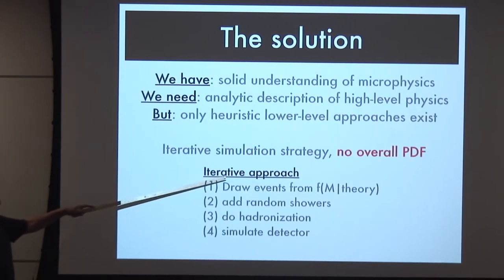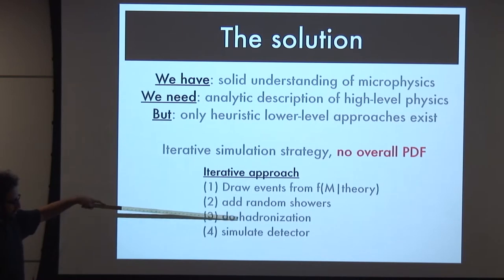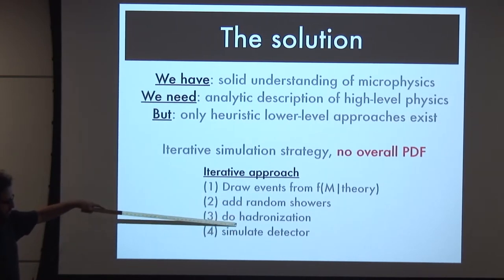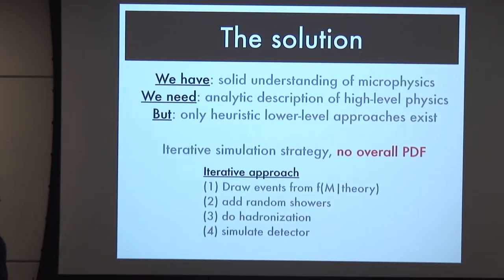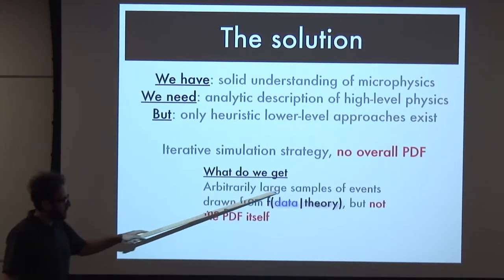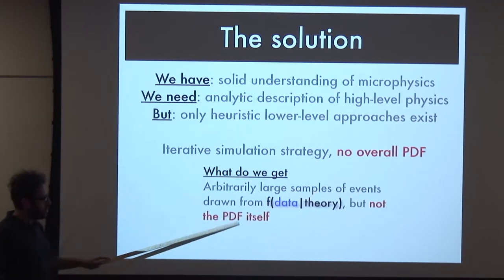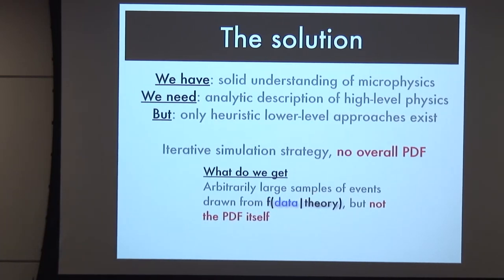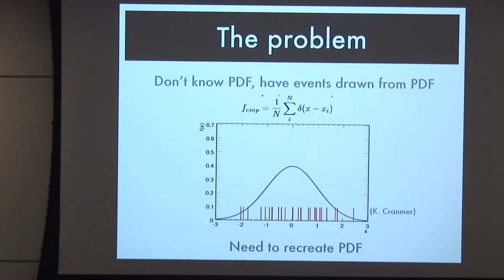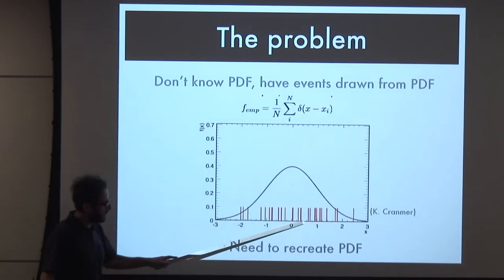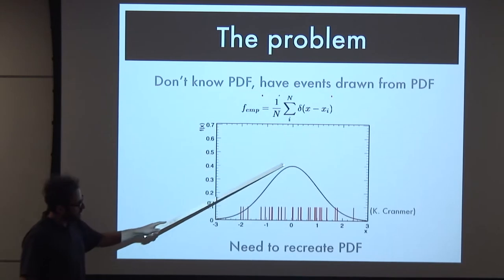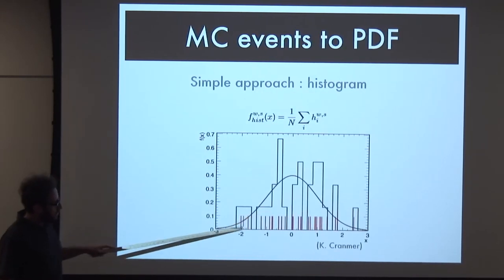What we can do is draw events from this and push them through simulators to add random showers, digitization, and simulate detectors. This means we're in a funny statistical situation where we can get arbitrarily large samples of events, but we don't know the underlying distribution from which those events are drawn. We have a procedure for generating as many examples as we'd like, but we don't know what it is. If you have a pile of examples, you can recreate the original function - you can use a histogram, and that works pretty well.